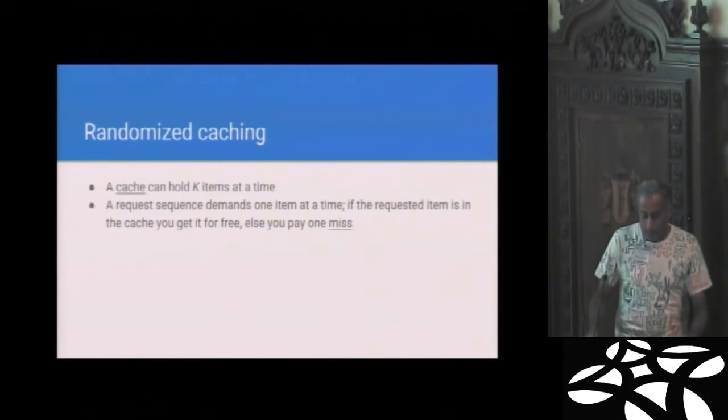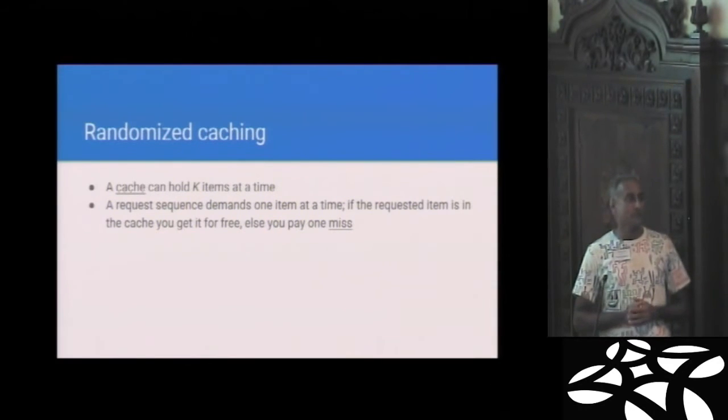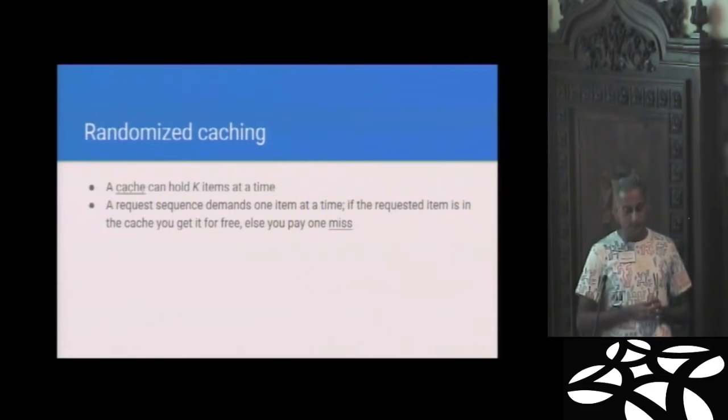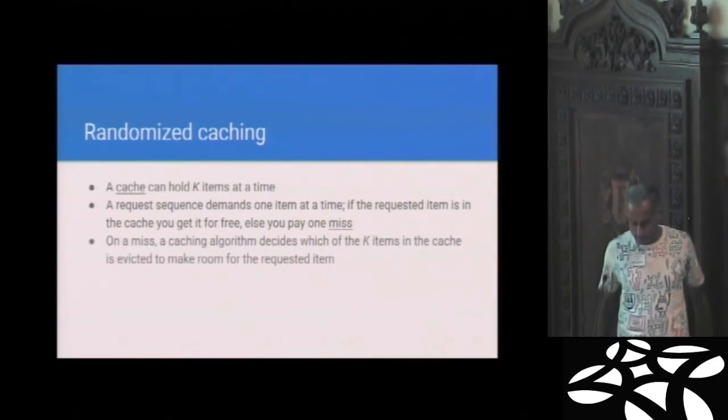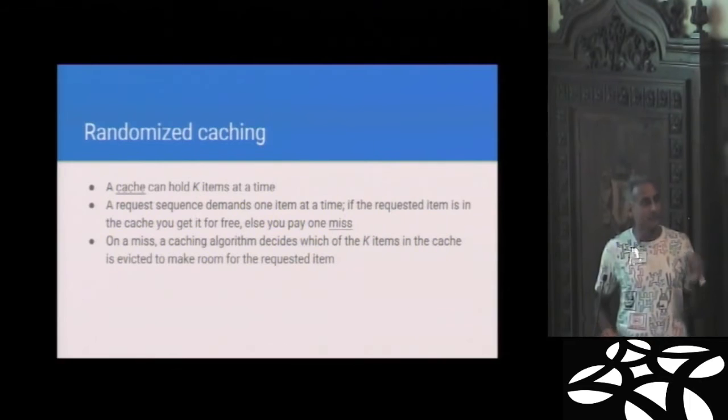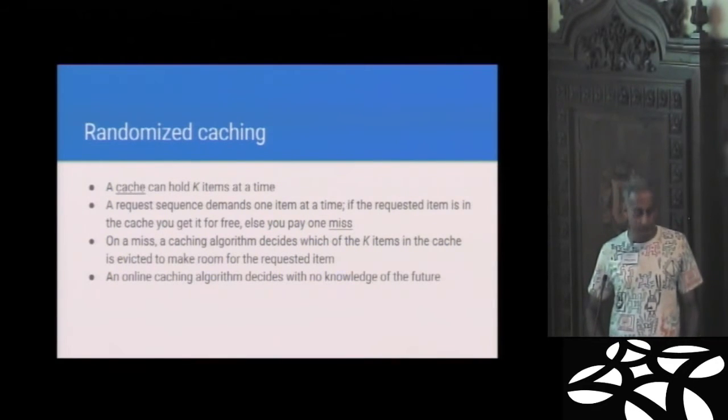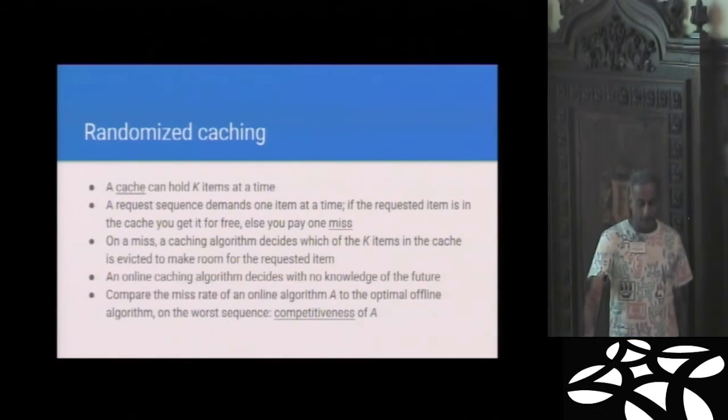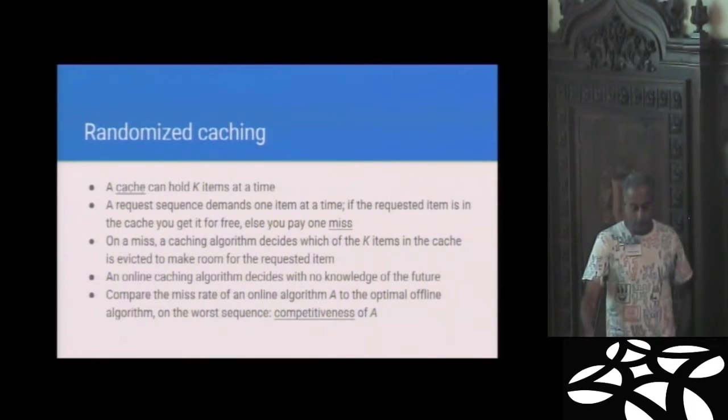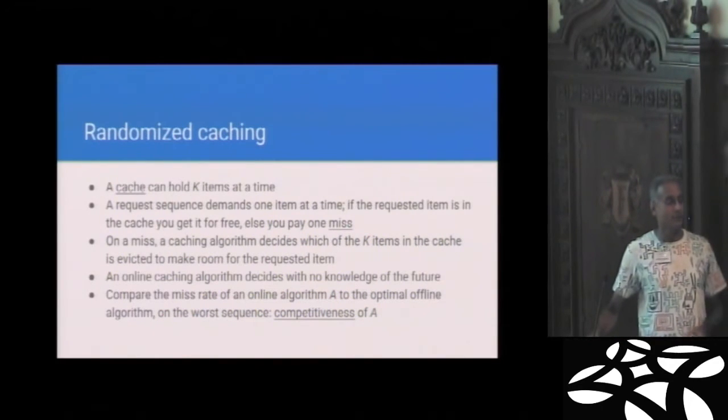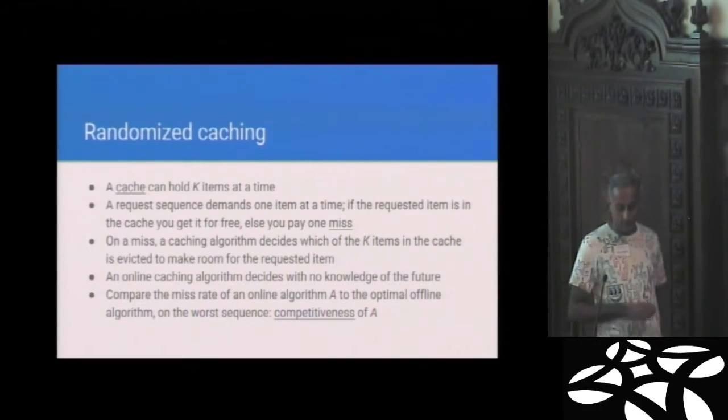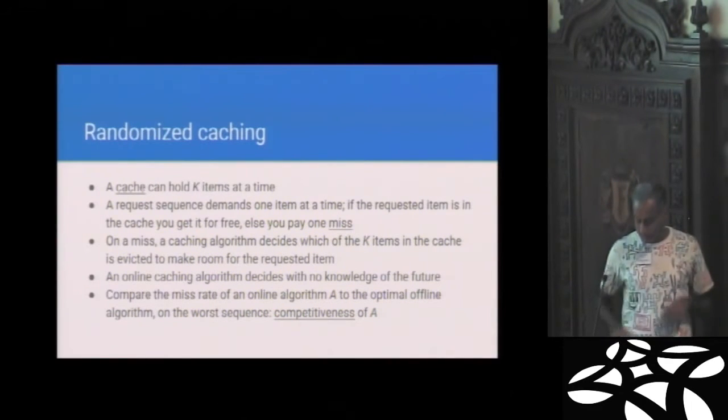The particular example I'm going to pick has to do with one of the papers he coauthored. And it has to do with this problem called randomized caching. This has to do with the competitive analysis of caching. So we have something called a cache and the parameter K that is the size of this cache. And then you have a request sequence that's presented to you, demanding one item at a time. And if the requested item is in the cache, you get it for free. Otherwise, you pay a miss. And what we're going to look at is how many misses you pay. And once you miss, the caching algorithm must evict something in the cache and pull something in from the outside to make room for the requested item.